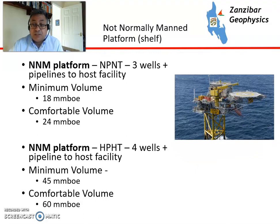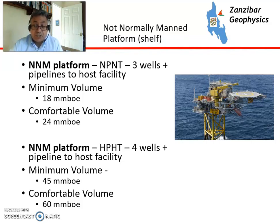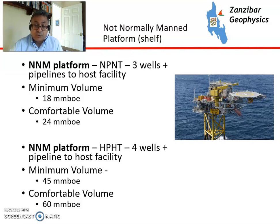Looking at not normally manned platforms — a platform that does not have people on it normally, although it could be accessed, as shown by the helipad in this picture. Minimum volume for normal pressure, normal temperature with three wells, you'd want about 18 million barrels of oil equivalent; 24 million to be comfortably safe. With high pressure, high temperature — where you have significantly more costs in terms of engineering and wells, and higher safety risks with a pipeline to a host facility — you'd want about 45 to 60 million barrels of oil equivalent to be really safe.